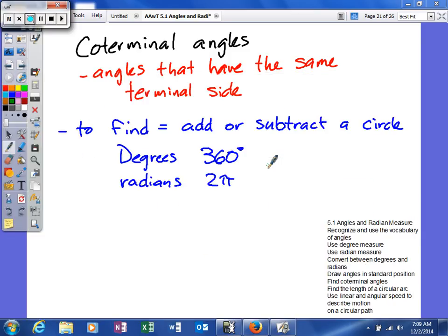Next we're going to talk about how to find coterminal angles. Coterminal angles are angles that have the same terminal side. They're angles that end at the same place. To find those, we add or subtract a circle. In degrees, that's 360 degrees; in radians, it's 2π.